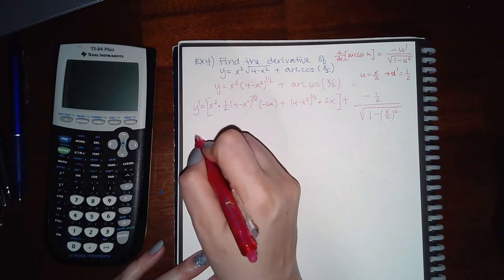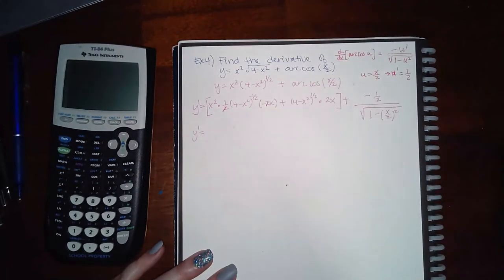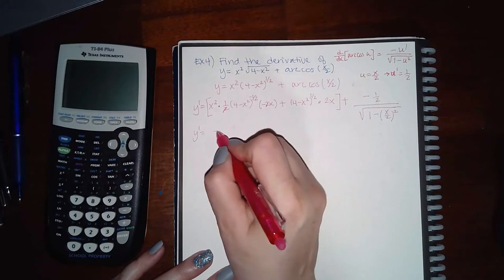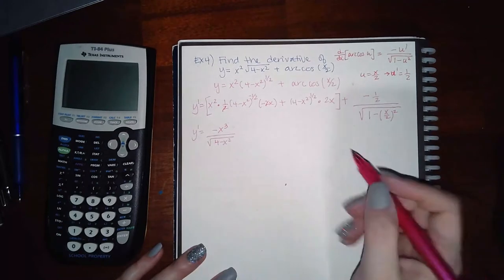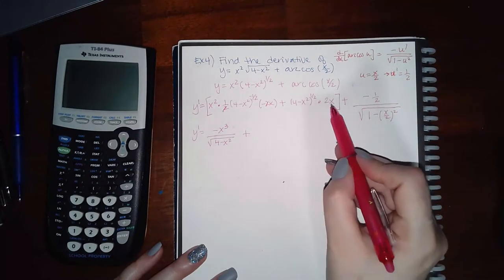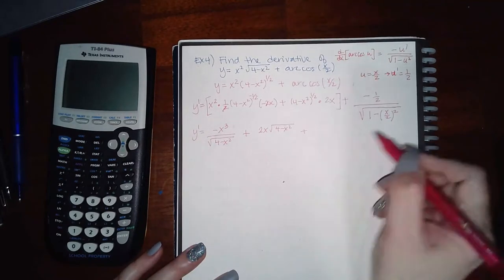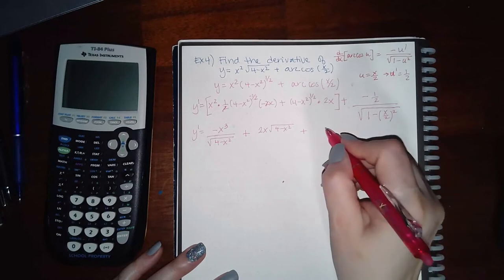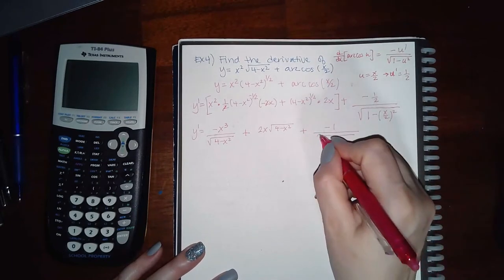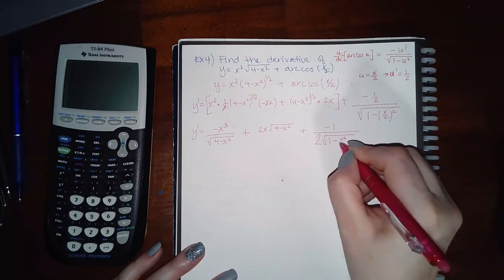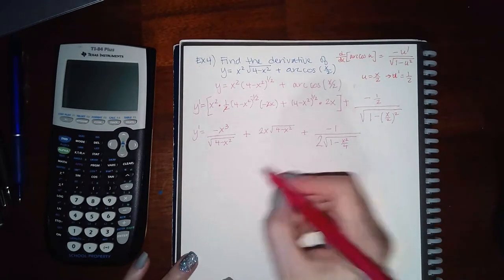We're going to have to simplify quite a bit. Starting with the first term: the 2 will cancel the 2, and x² times 1 times negative x is negative x³ — the negative exponent means the square root is in the denominator. Then I write my plus sign. Multiplying gives 2x times the square root of 4 minus x². For the last part, the 2 can be written in the denominator: 2 times the square root of 1 minus x²/4, because (x/2)² = x²/4.